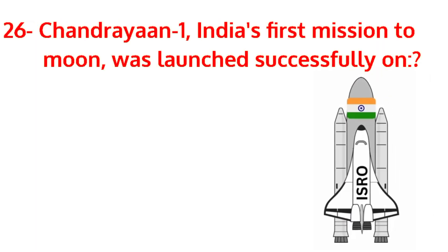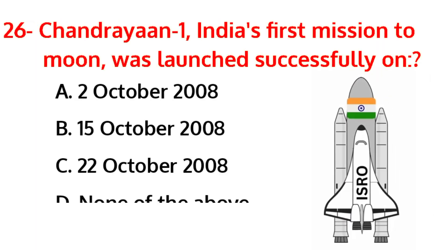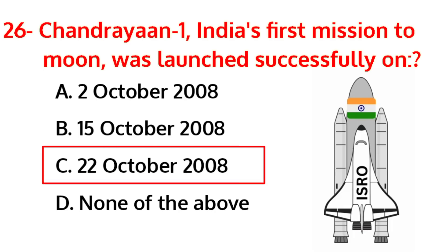Chandrayaan-1, India's first mission to the moon, was launched successfully on? The correct answer is option C, the 22nd of October, 2008.